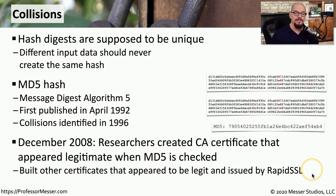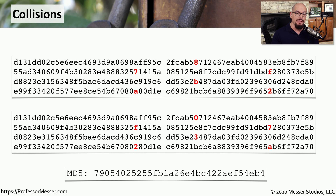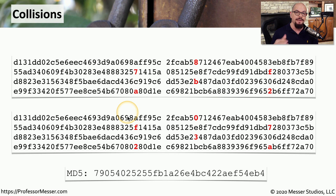This creates significant concerns if you're relying on CA signatures for the trust of your website certificates. Here's an example of a collision with MD5: two separate inputs that are mostly similar but have some differences highlighted in red. If you perform an MD5 hash against both, you should receive a very different hash — but in reality, you receive exactly the same hash. That is a hash collision.